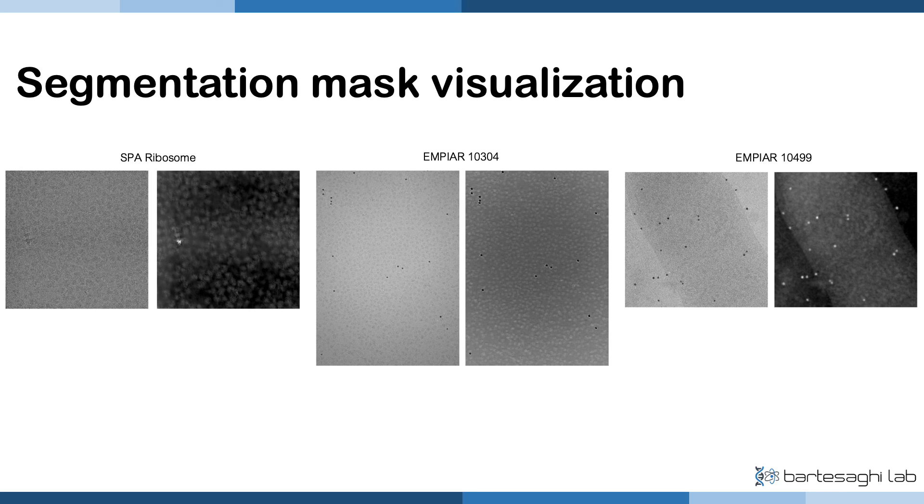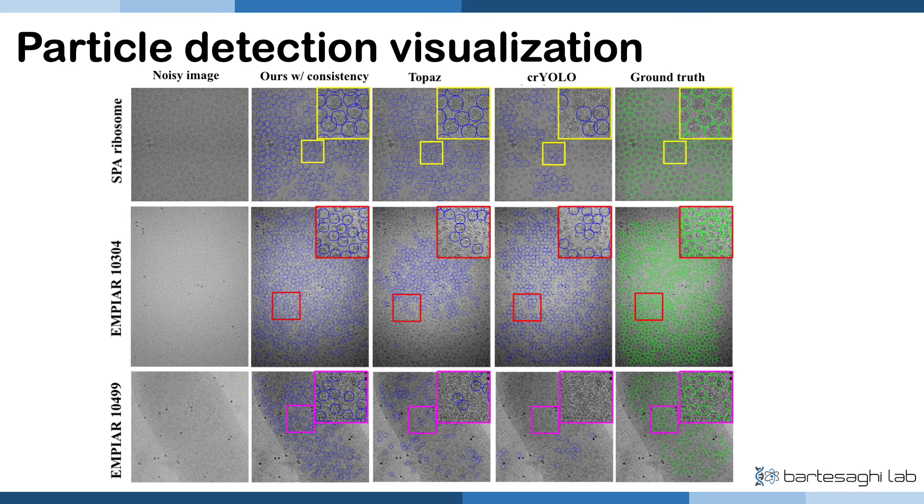We also provide some visualization of our results. Here we are showing the segmentation mask. And in all three cases, our algorithms are able to identify more particles, and this is especially more obvious for 10304 and 10499.